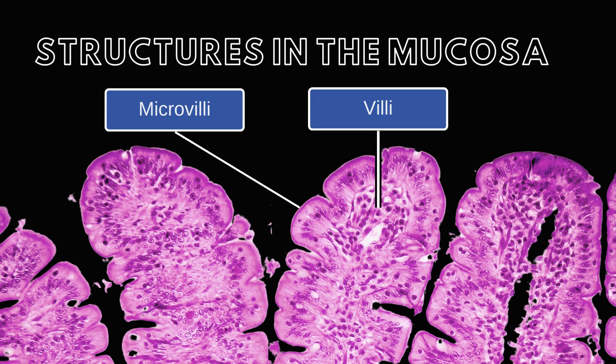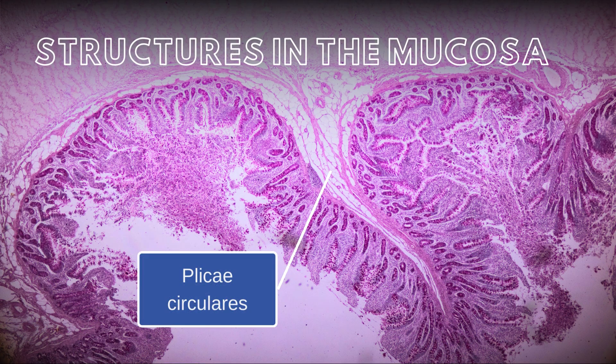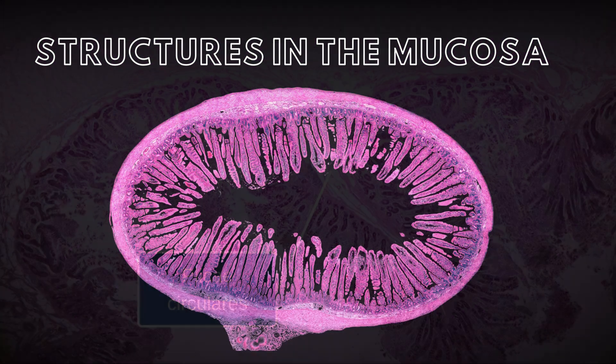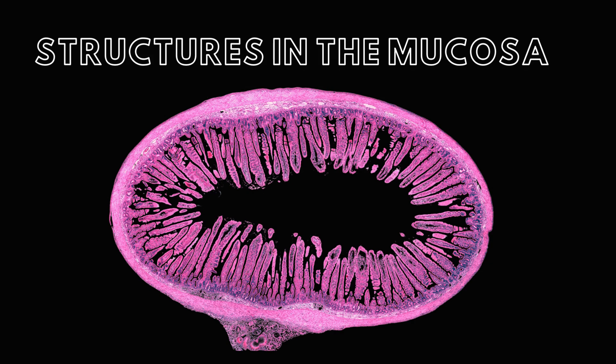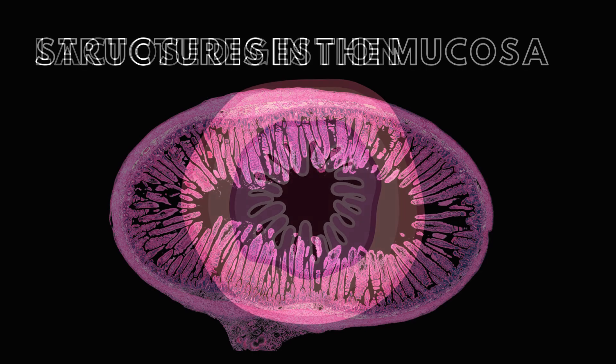Microvilli are tiny projections on individual cells. Villi are larger, finger-like projections with a core structure, and plicae circularis are transverse folds that run along the inner surface of the small intestine. Together, these structures maximize the absorptive surface area, ensuring efficient nutrient absorption in the digestive process. Let's take a closer look at the mucosa.